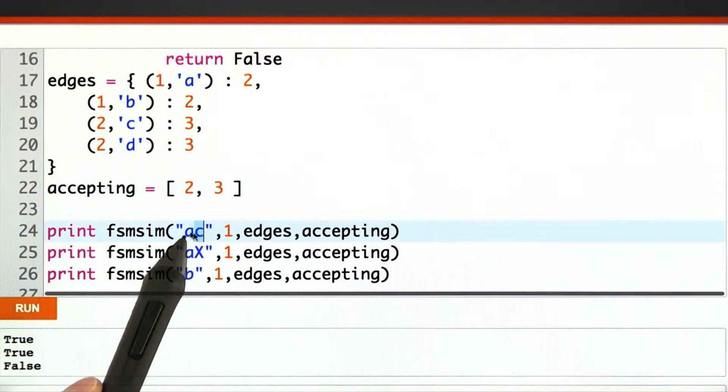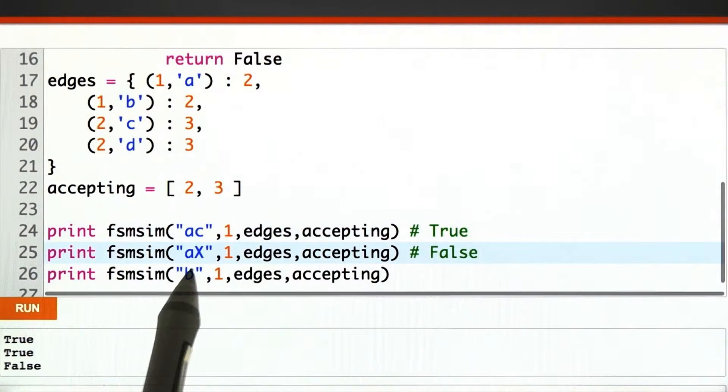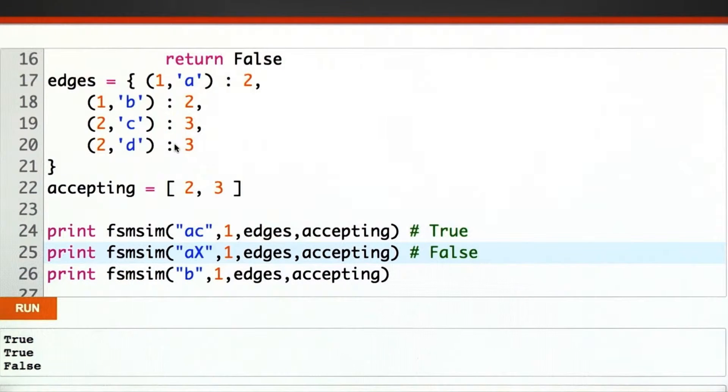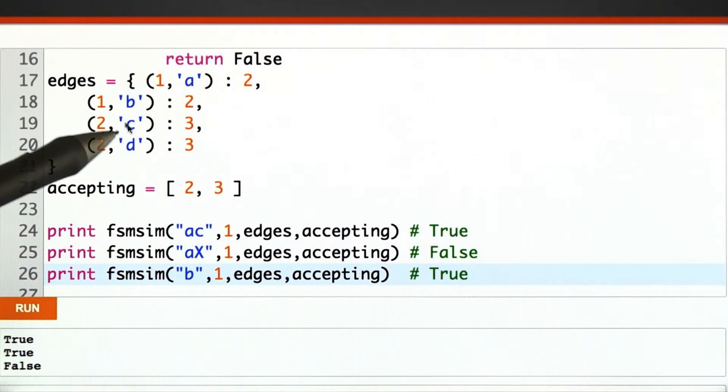And then down here, I have three test cases. AC, which should be accepted. AX, which should not. X has no business in this regular expression. And just B alone, which should be fine because the CD part is optional.